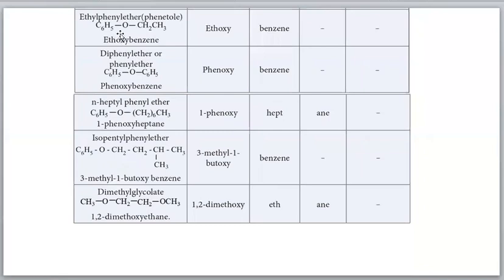For ethyl phenyl ether - compare e and p - ethyl comes first, so ethyl phenyl ether. This compound also has the special common name phenetole. When C6H5-O-CH3 it is anisole; when C6H5-O-C2H5 it is phenetole. Two phenyl rings give diphenyl ether or phenyl ether.